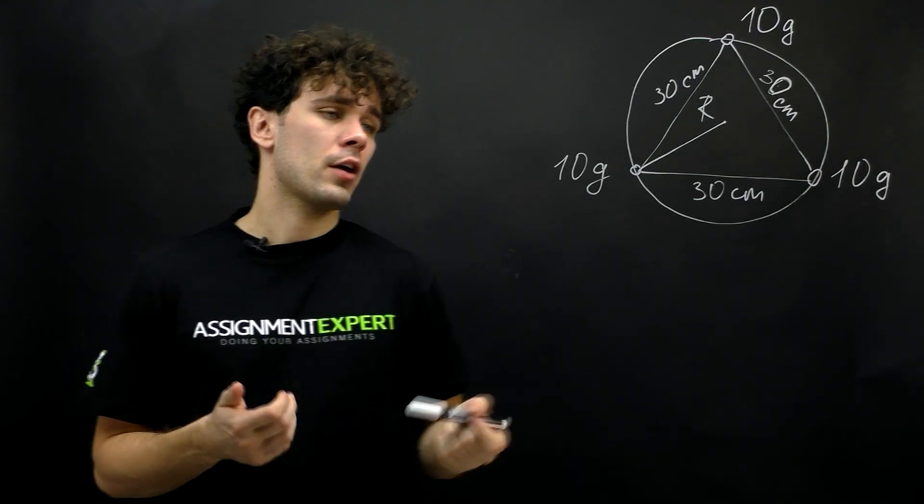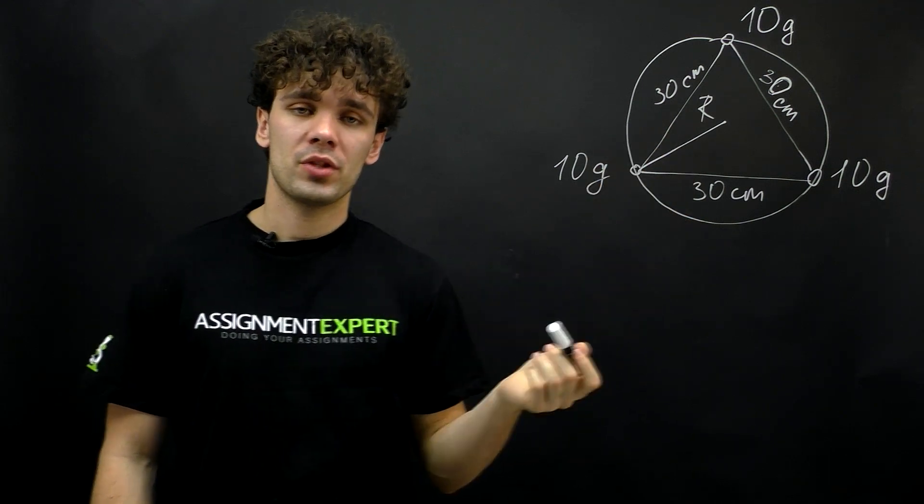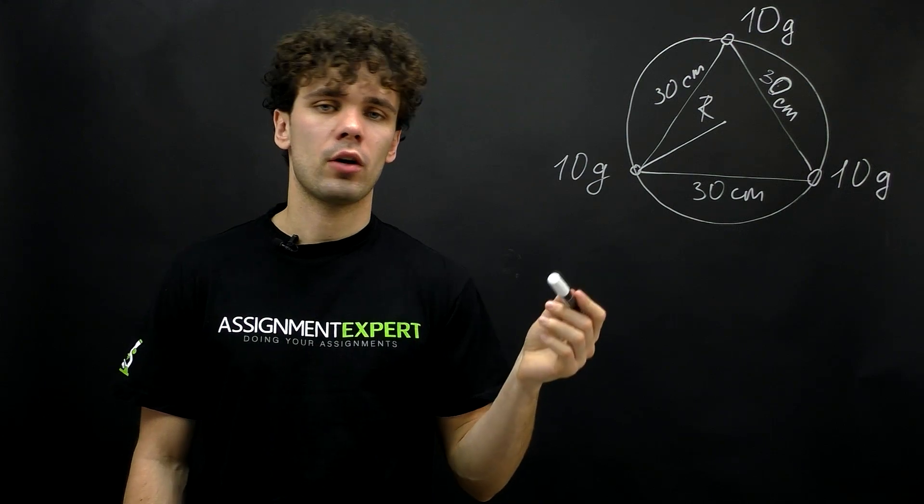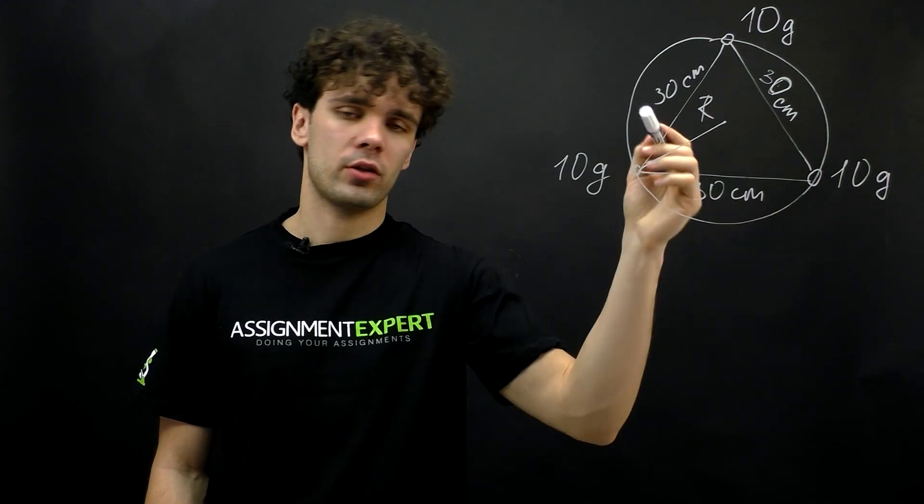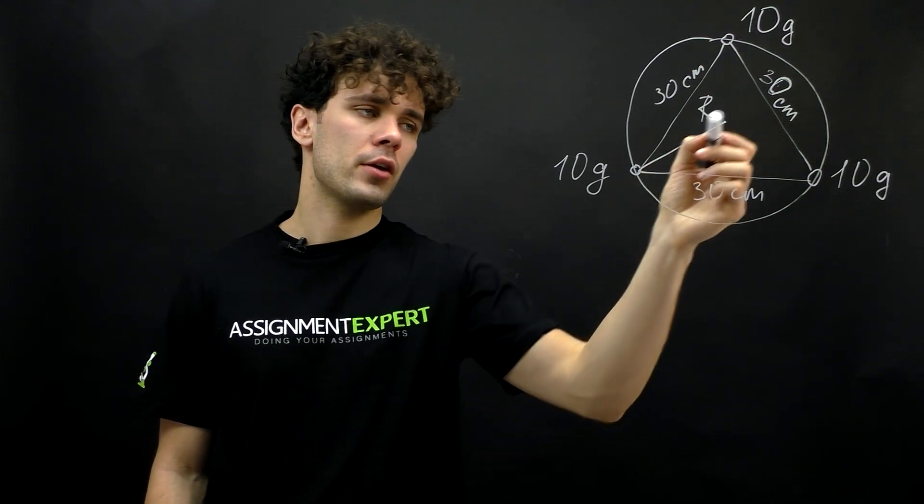First let's find the distance from any vertex to the center of mass. From symmetry it comes that the center of mass is located at the center of the circumcircle of the triangle, so the distance we're looking for is nothing else but the radius of this circle.